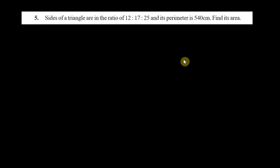Hello students, in this video we are going to solve question number 5 and question number 6 of exercise 12.1 Heron's formula. The question is: sides of a triangle are in the ratio of 12:17:25 and its perimeter is 540. Find its area. So instead of giving the length of the sides directly, they have given the length of the sides in the form of ratio.